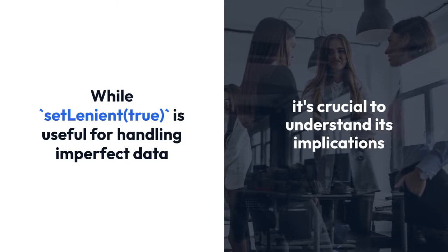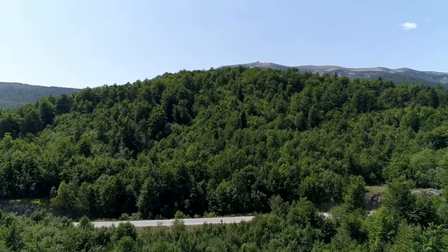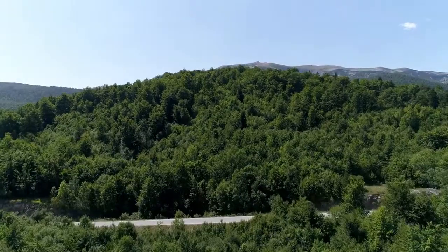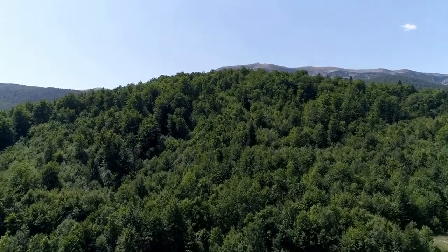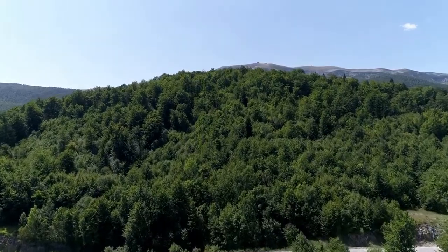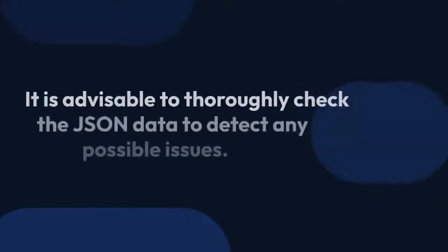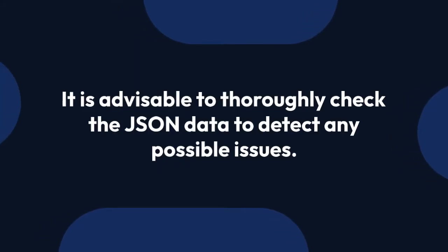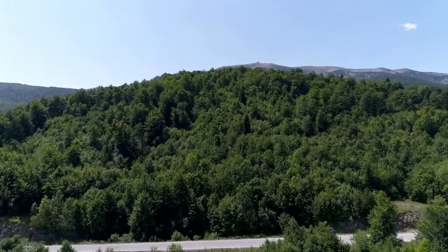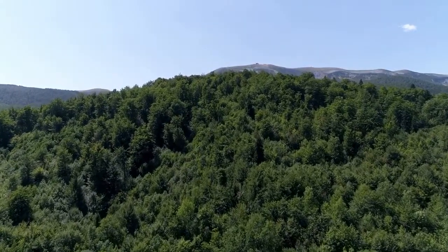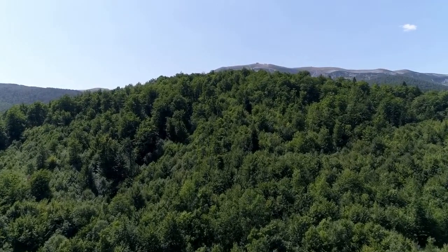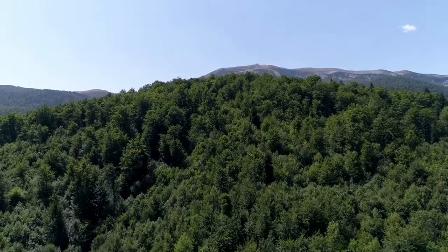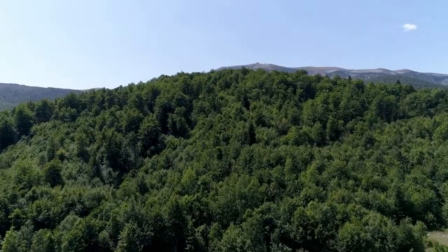Important considerations: While setLenient(true) is useful for handling imperfect data, it's crucial to understand its implications. It can mask serious errors in the JSON data. Using this method, you are essentially saying, 'I know this JSON might be flawed, but I'll try my best to get some useful data out of it.' The risk is that you might misinterpret the data and cause other issues. It is advisable to thoroughly check the JSON data and always aim to address the root cause of the malformed JSON, preferably with the API provider. Using setLenient(true) is a temporary solution, not a long-term fix. Debugging and validation of the JSON data received from the API should be done regularly.